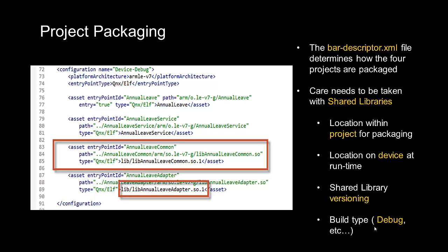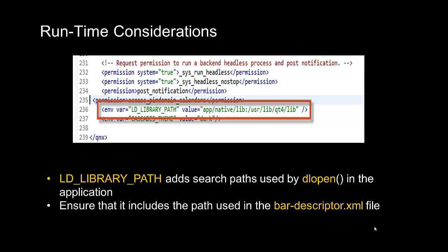So we know how all the assets will be packaged into the bar file, but how do we let BlackBerry 10 know where to find these files at runtime on the device? Further down the bar descriptor file, a highlighted directive makes sure that the application is launched with the environment variable LD_LIBRARY_PATH set to include the path to app/native/lib, which is where the shared libraries end up on the BlackBerry device. This means that at runtime, the application can locate the shared libraries we've created in this location on the device.